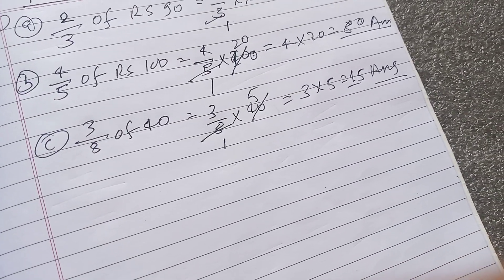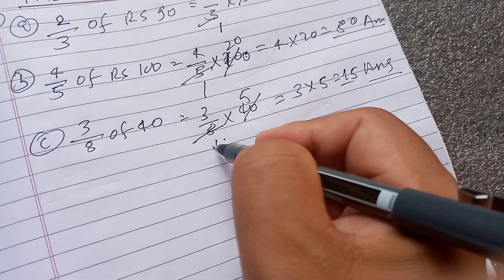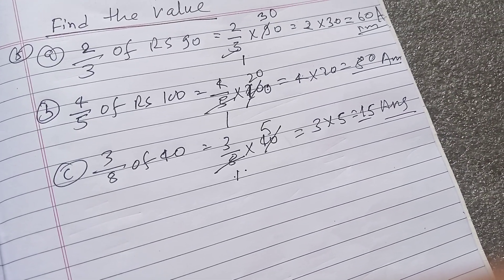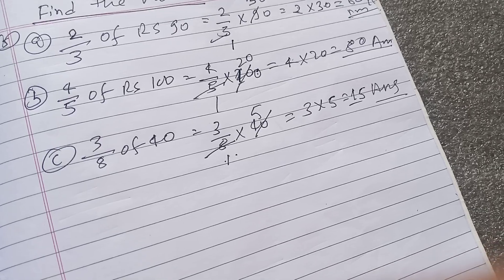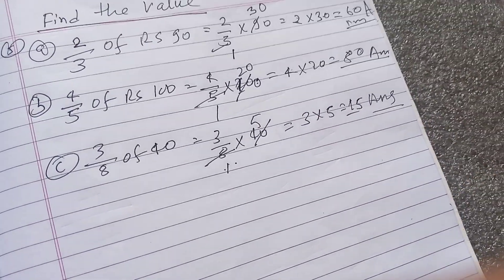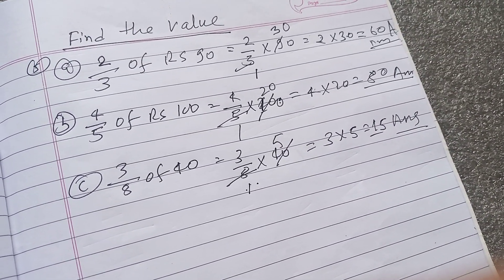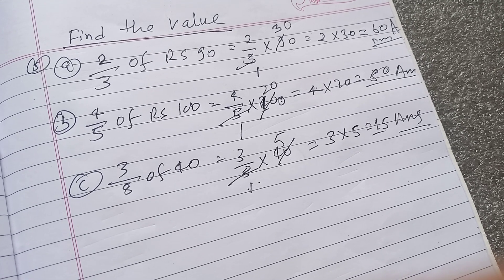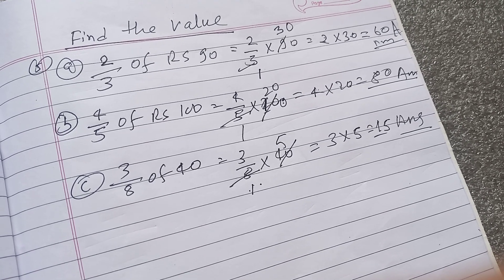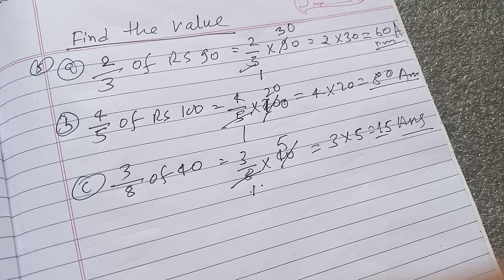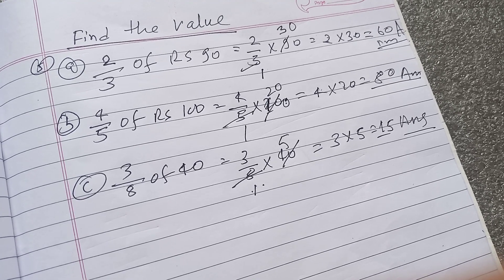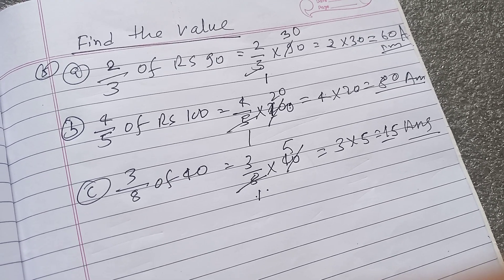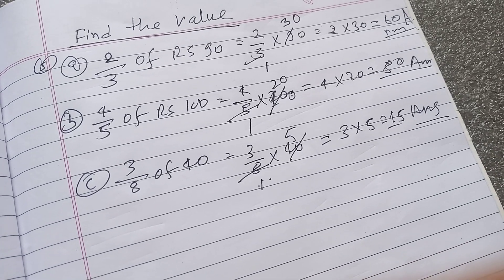8×8 and 8×5 is 40. Yes. And this is 3×5 — 15. Yes, it's the same. 8×8 and 8×5 is 14, 3×5 is 15. Same formula.